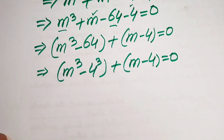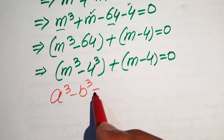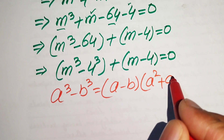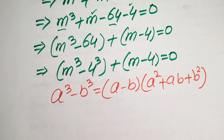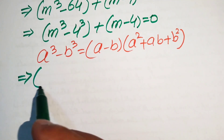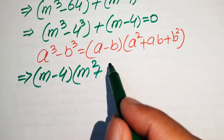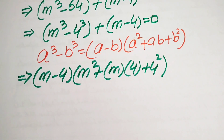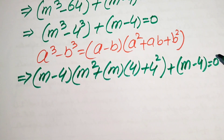We now apply the difference of cubes formula: a³ - b³ = (a - b)(a² + ab + b²). Applying this to the first term m³ - 4³, our equation becomes (m - 4)(m² + 4m + 4²) + (m - 4) = 0.